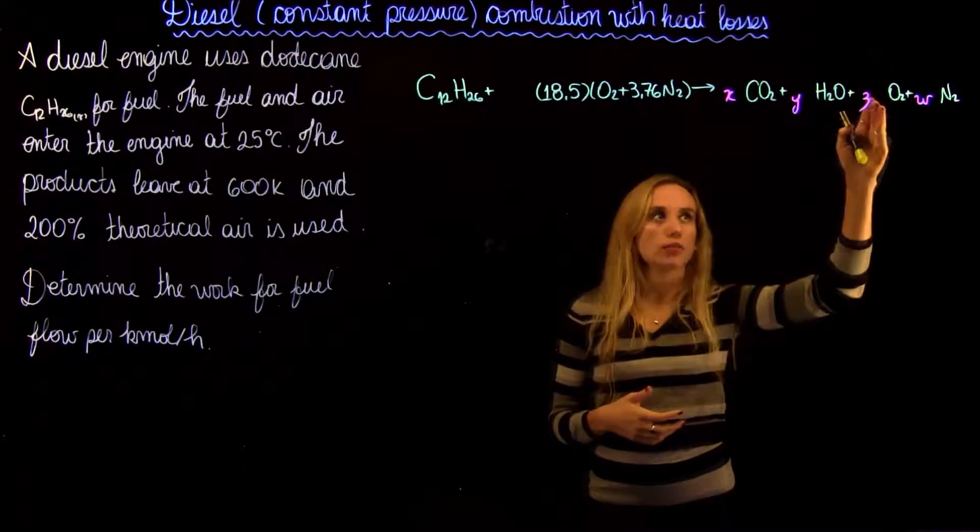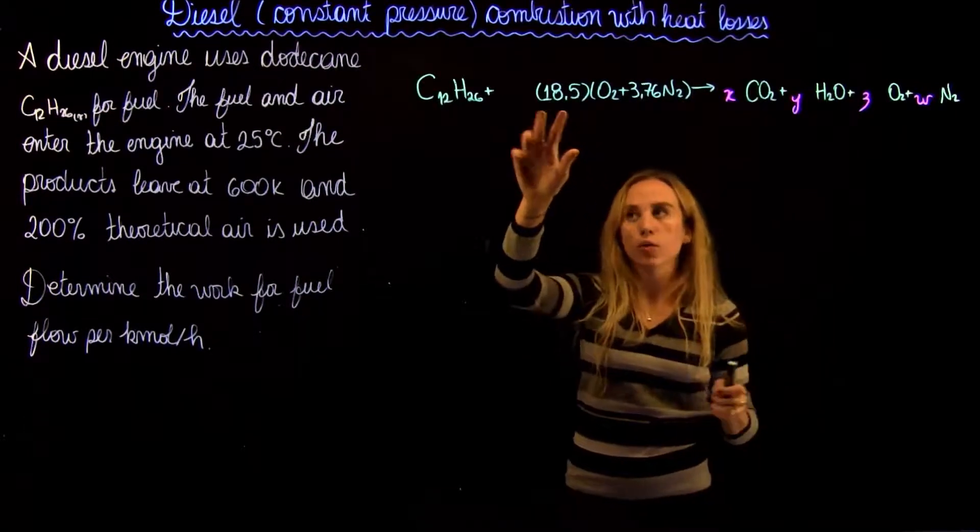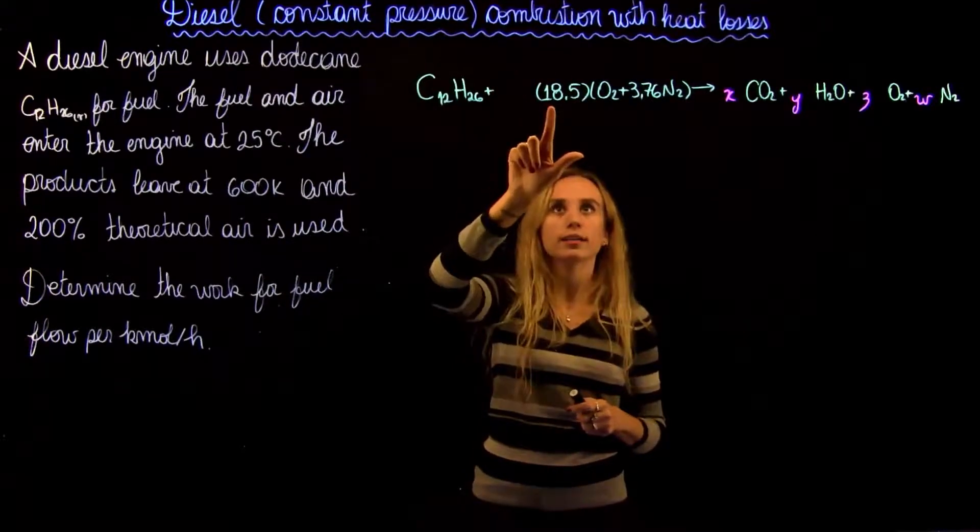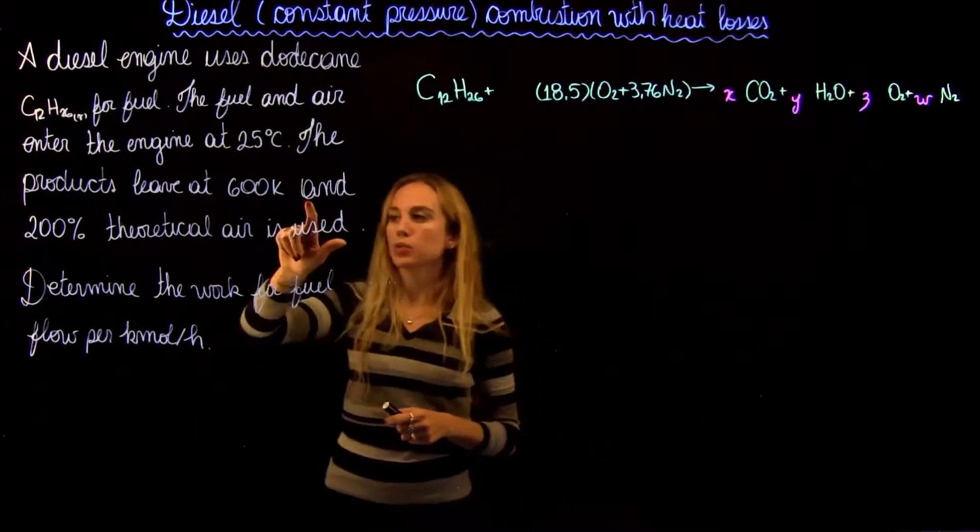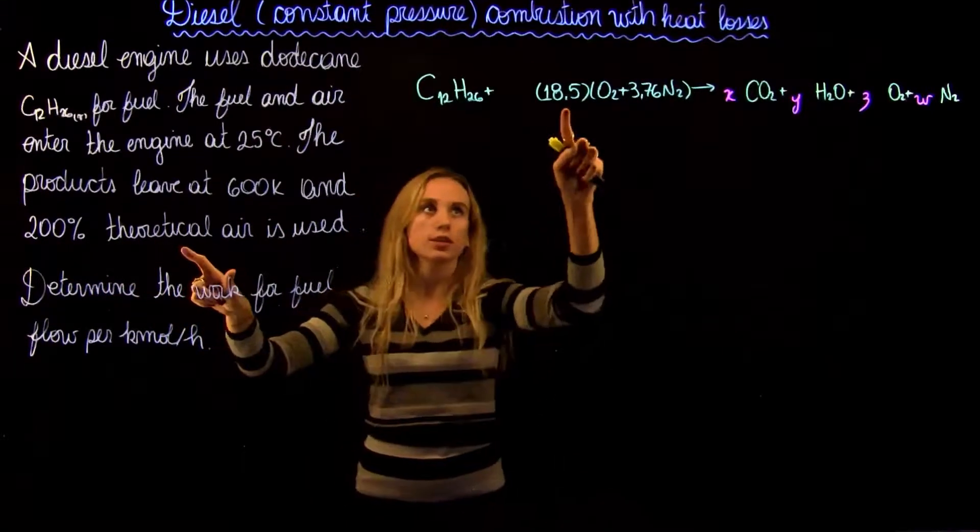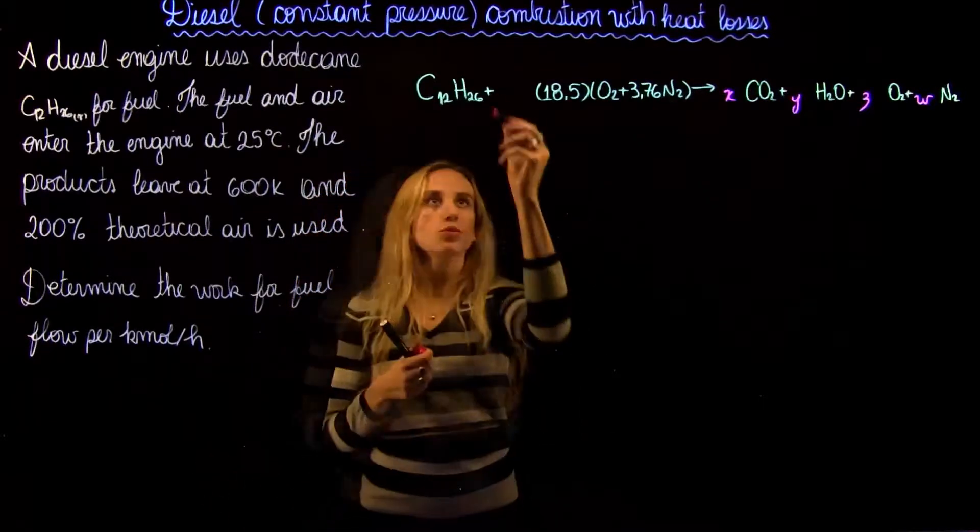there's no oxygen in the product and we're going to have certain stoichiometric coefficients. We're going to be able to solve and if we do that, we're going to find 18.5. And in this case, we are told that we use 200% of theoretical air. So this is theoretical air and we're using 200%, so that's going to be 2 times 18.5.